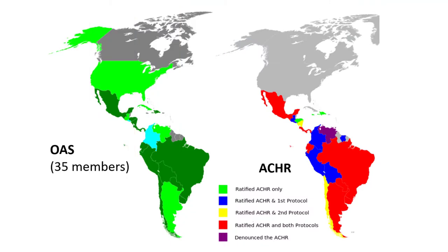Looking at this map, we can see that there are 35 state parties to the OAS, and therefore also to the American Declaration on Human Rights. But on the other hand, there's the more far-reaching system under the American Convention on Human Rights, which potentially also includes jurisdiction for the Inter-American Court of Human Rights, and this has only 22 state parties. So there are additional obligations here, as well as a more intricate and arguably more effective complaint mechanism that includes both the Commission and the Inter-American Court.